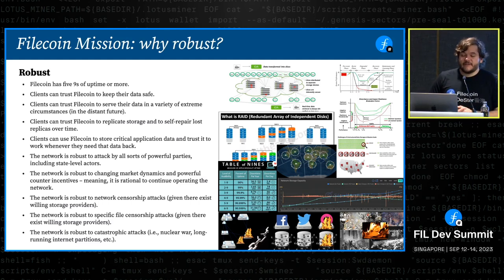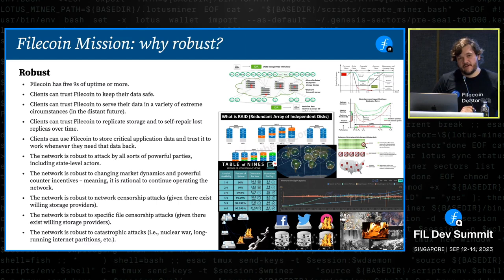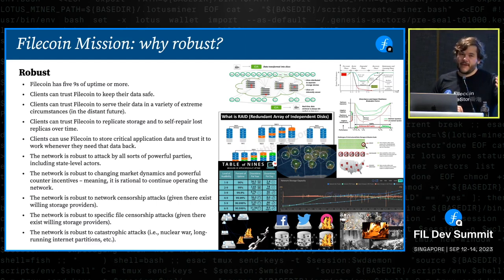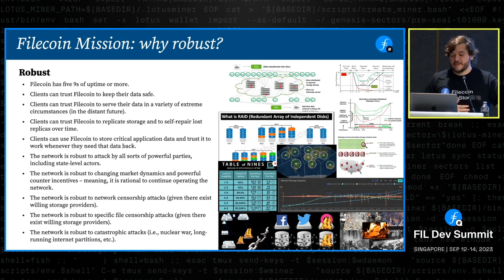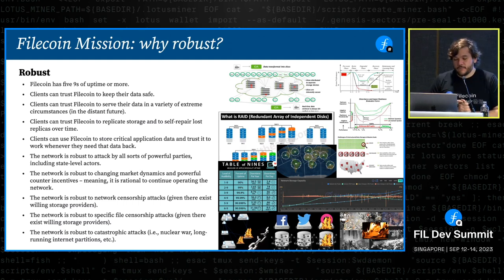One thing that would be great to achieve — this is very hard, but the early internet was designed for this — it would be great to be able to resist mass-scale disasters. The early internet was designed to survive things like nuclear war or catastrophic seismic events or long-running internet partitions. It would be amazing if Filecoin could survive that kind of thing. Right now I don't think any blockchain is able to do that today, but maybe in the future we'll be able to get there.